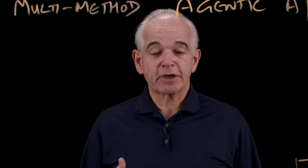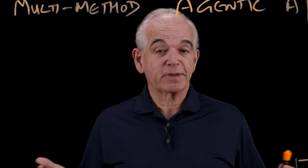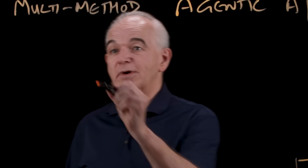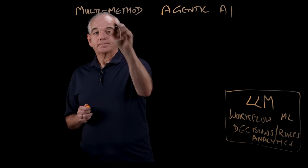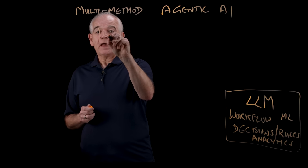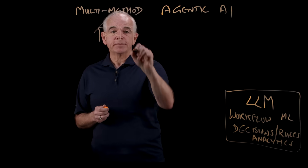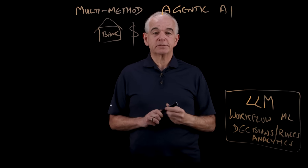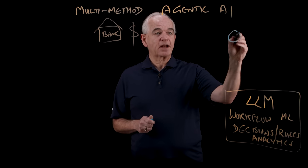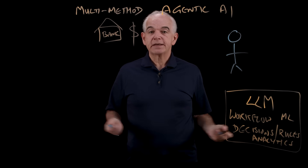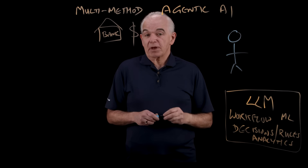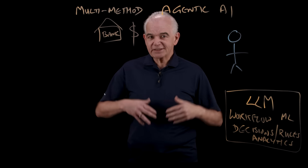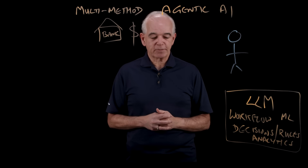To illustrate this, I'm going to pick a complex problem: how does a bank decide to lend you money? A bank has money it wants to lend people. How does it decide that a particular person is a suitable person to lend money to? Let's think about that in an agentic AI framework.